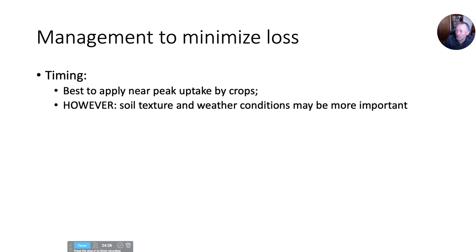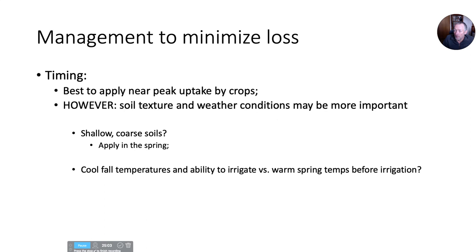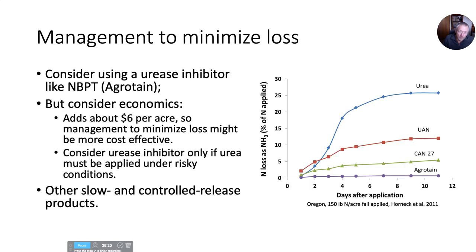Timing: it's always best to apply nitrogen fertilizer close to the peak uptake by crops — around early flowering in June usually for most Wyoming crops. But soil texture and weather conditions might be even more important. If you're dealing with shallow coarse soils where volatilization rates can be very high, apply in the spring as close as possible to crop uptake. But if you have cool temperatures in the fall, the ability to irrigate it in, and you know things will warm up before spring irrigation is available, then applying it in the fall and irrigating it in might make sense.